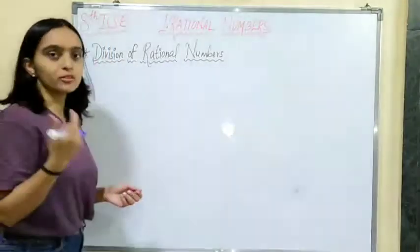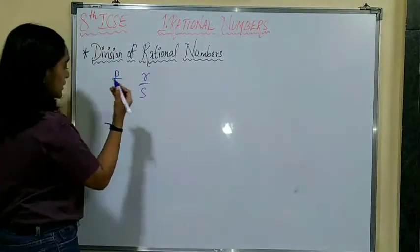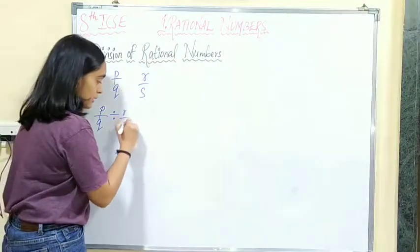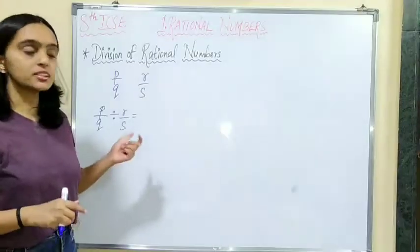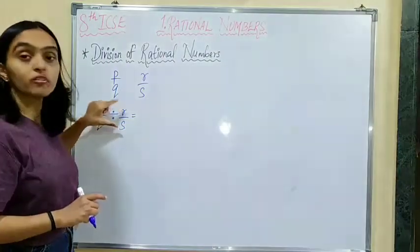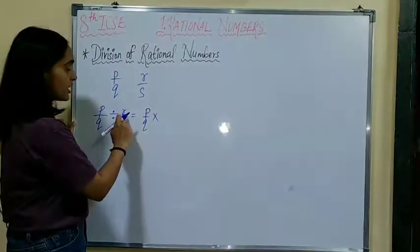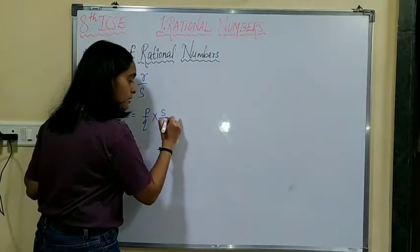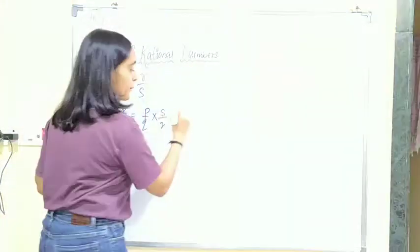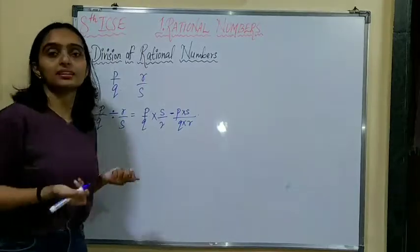Division of rational numbers: if you have two rational numbers, say P upon Q and R upon S, then if you have to divide both of them — that is P upon Q divided by R upon S — you have to multiply the first rational number with the reciprocal of the second rational number. That is, P upon Q multiplied by the reciprocal of R upon S, which is S upon R, giving P multiplied by S upon Q multiplied by R.